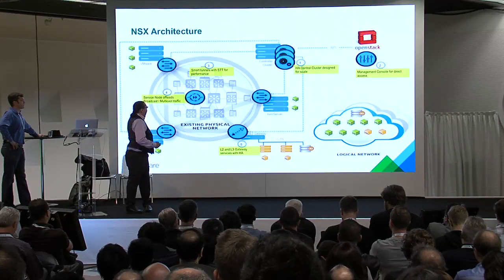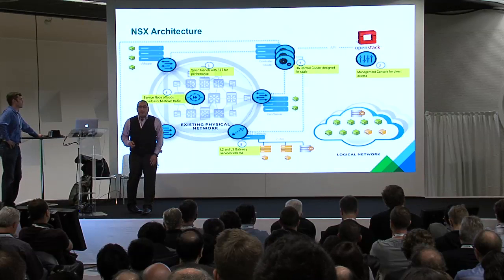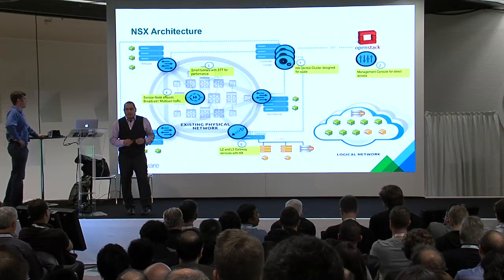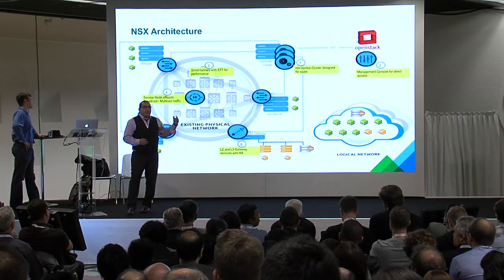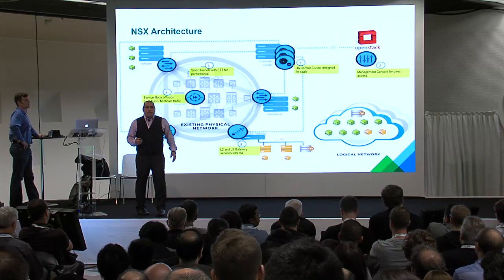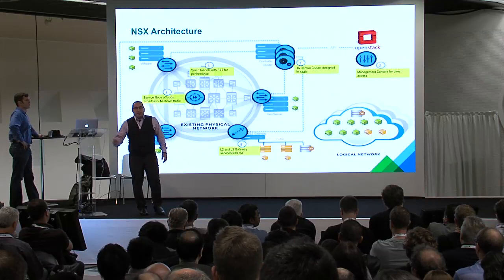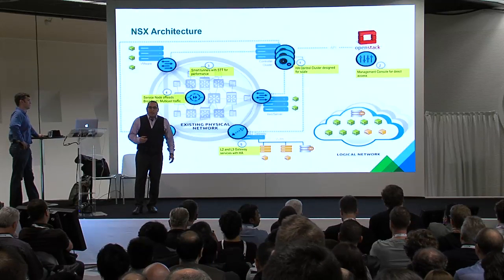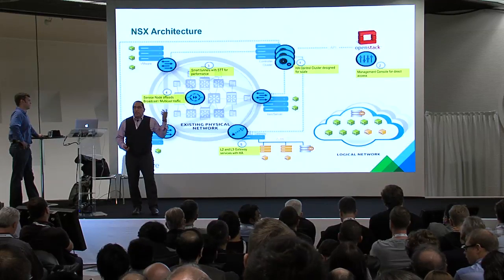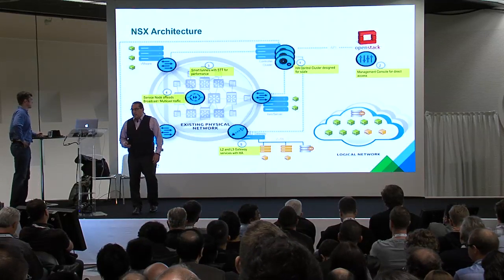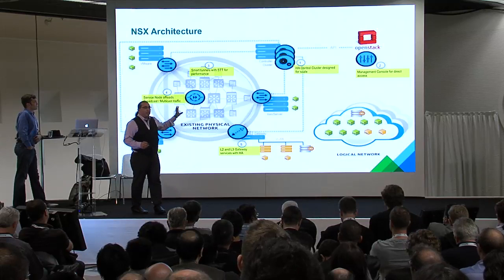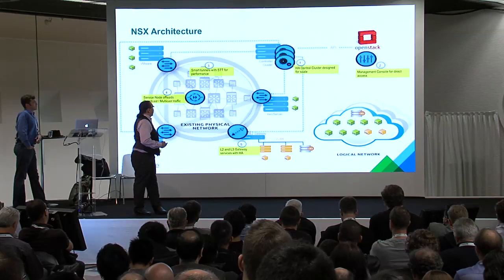We have the ability to do L2 and L3 type gateway services in a highly available state. These services are active-active, so if you lose one of the edge gateways, all the information gets synced between the systems and a new system will take over for that particular process. You have this highly scalable infrastructure to provide the logical network for your environment.